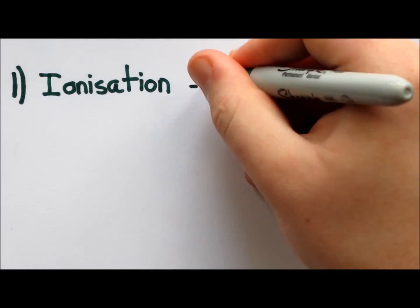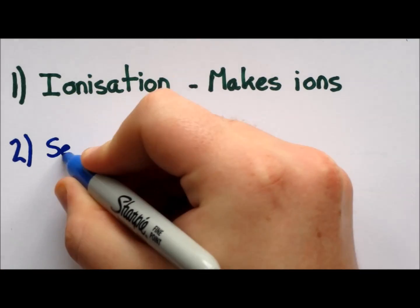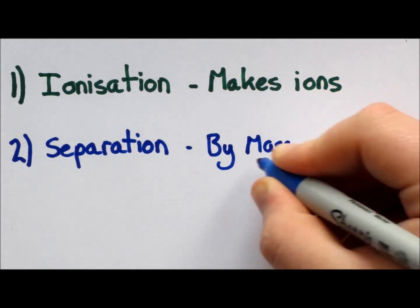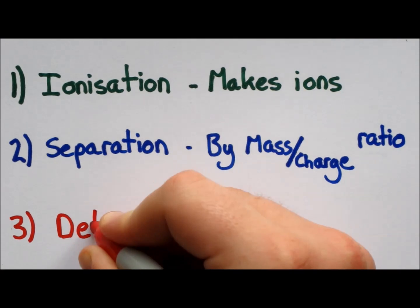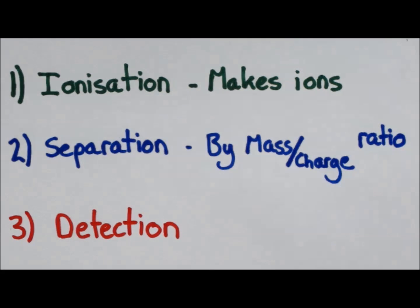It does this in three steps. Firstly, it takes a sample and ionizes it. It then separates the ions by their mass to charge ratio. Finally, a detector registers these ions and transfers the information to a computer.